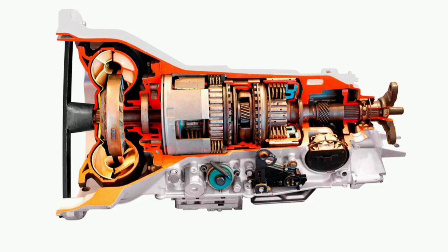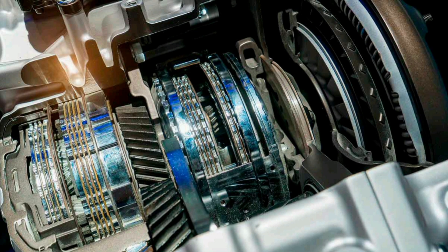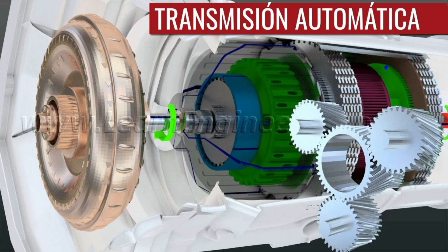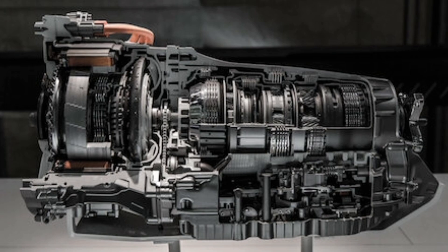2. Automatic transmission. The automatic transmission is a popular choice in many modern cars due to its ease of use and convenience. This system automatically changes gears without the driver's intervention. It uses a combination of gears, discs, and transmission fluid to transfer power from the engine to the wheels. The system detects changes in engine speed and load and selects the optimal gear ratio for best performance and efficiency based on driving conditions. The automatic transmission also offers driving modes such as Drive, Reverse, and Park.